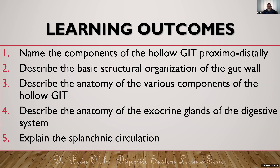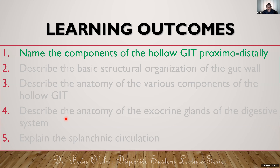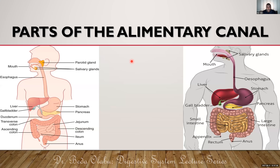Let's start with the first agenda: the components of the hollow GIT. We just want to follow food from your plate into the toilet. Food goes through you in that long journey. From your plate, food will go to the mouth — the oral cavity. Then from the mouth, food does not go to the esophagus directly; food goes to the pharynx, which is the throat.